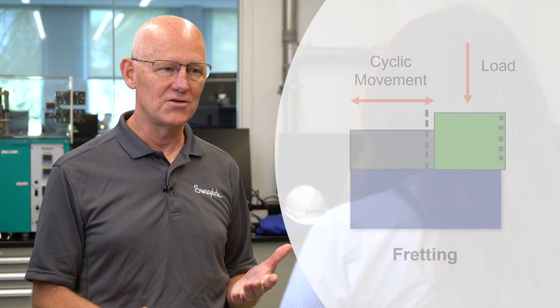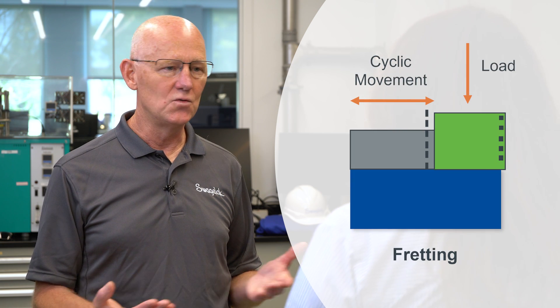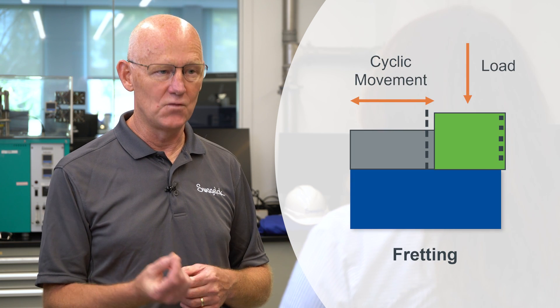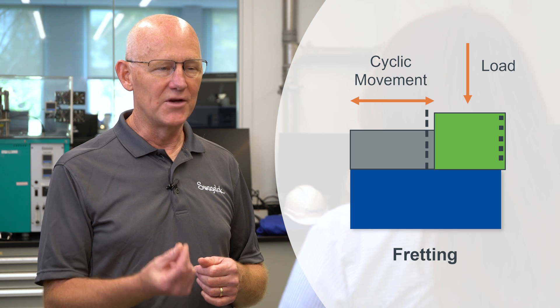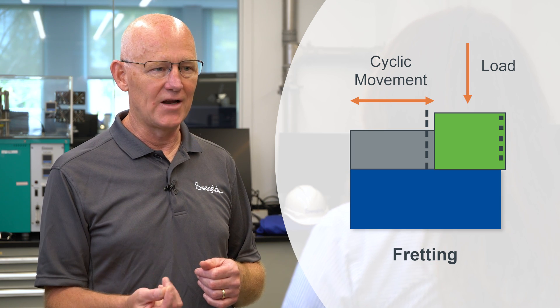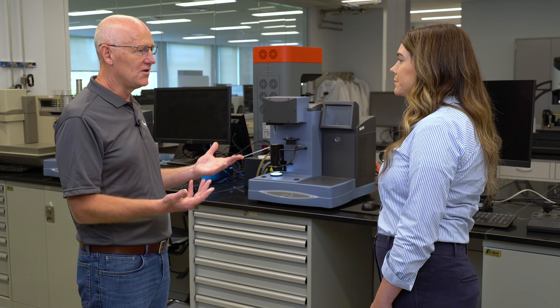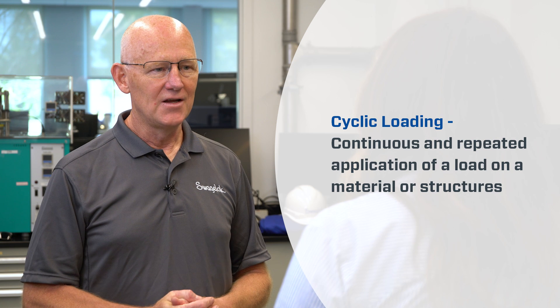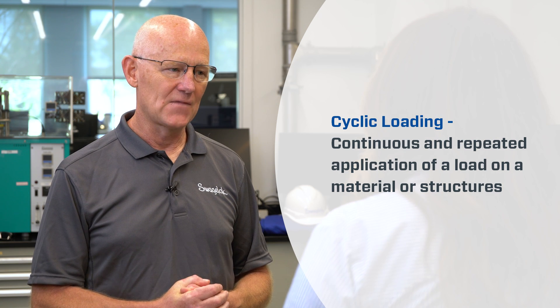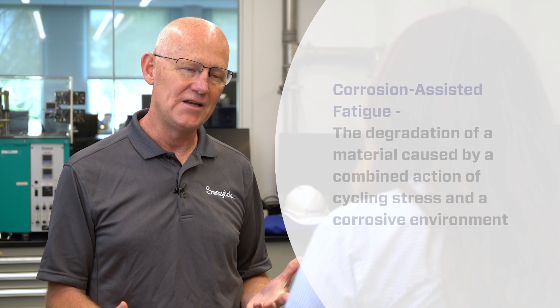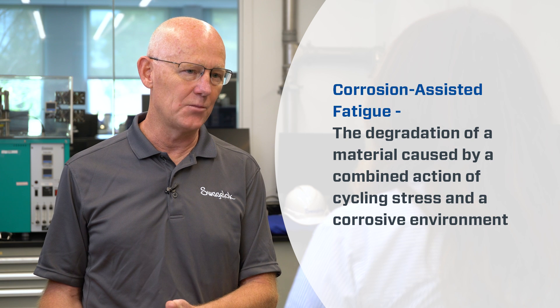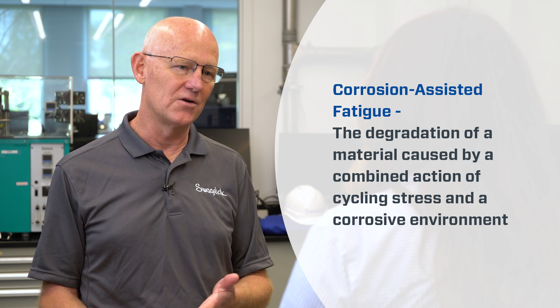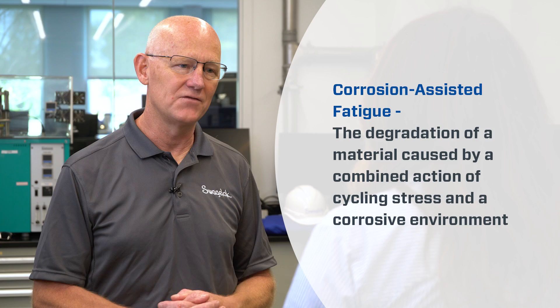A couple of other things that can happen: you can get fretting corrosion, where you have two components rubbing against each other and you would normally see some wear there, but the corrosive environment will accelerate that process. You can also get cyclic loading on components due to vibration or swaying of the platform itself, and that cyclic loading will result in fatigue. If it's in a corrosive environment, fatigue can be accelerated due to the corrosion in something called corrosion-assisted fatigue.